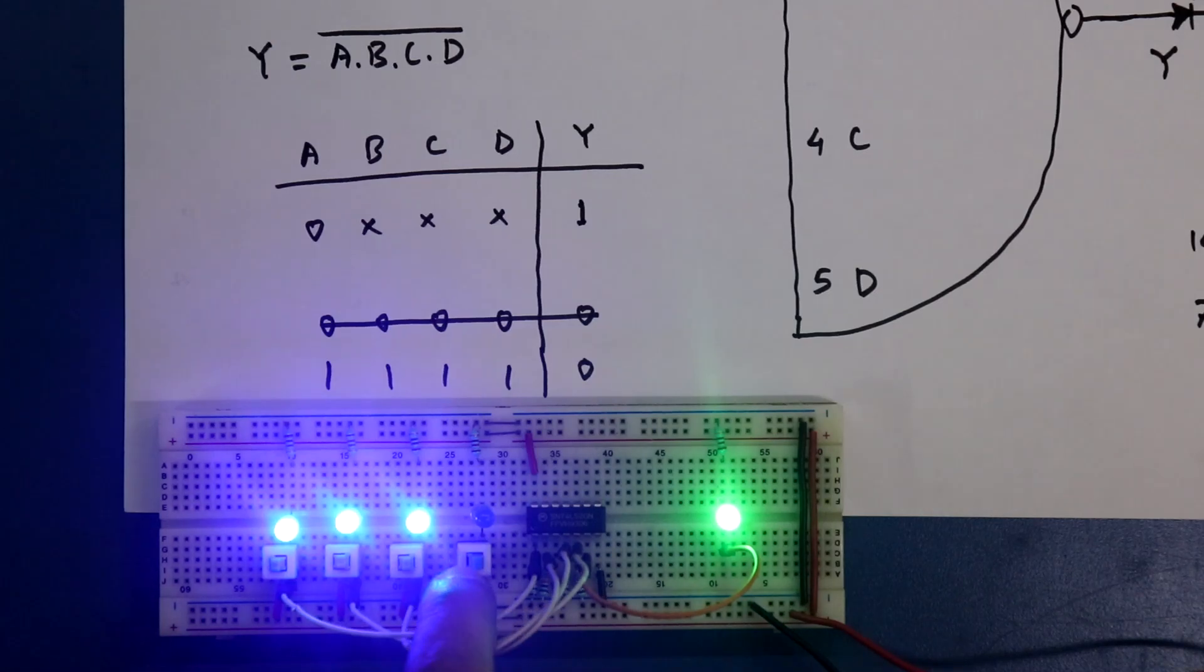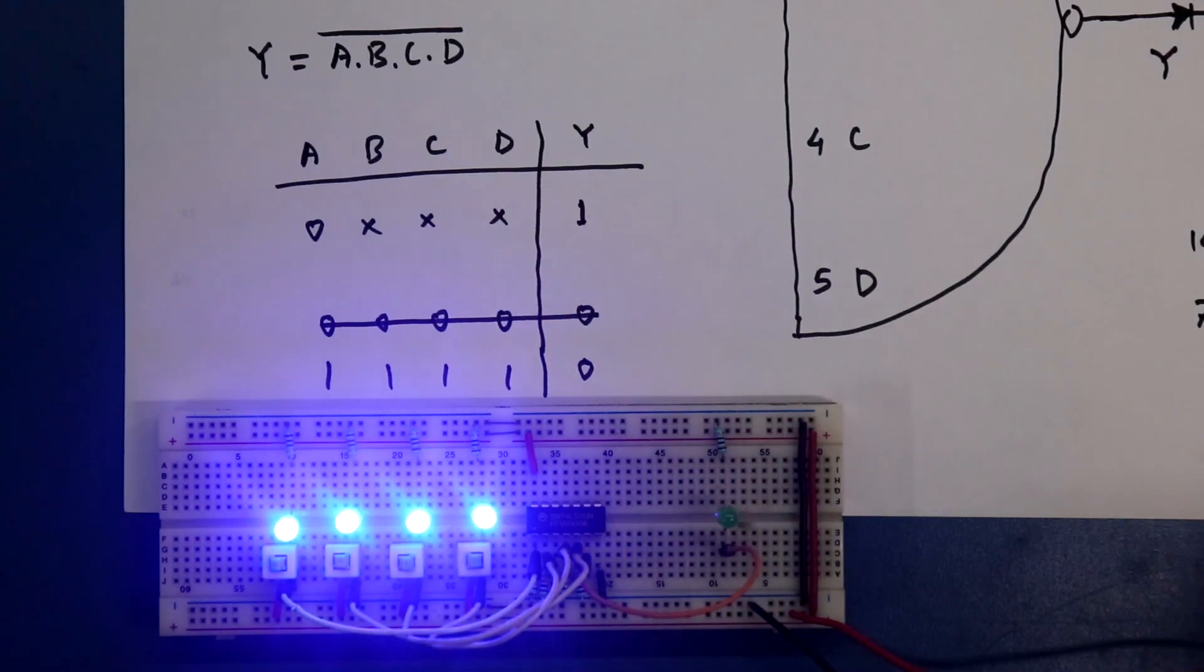Whenever all the inputs are one, then we will get output as zero. So this is how four input NAND gate works.